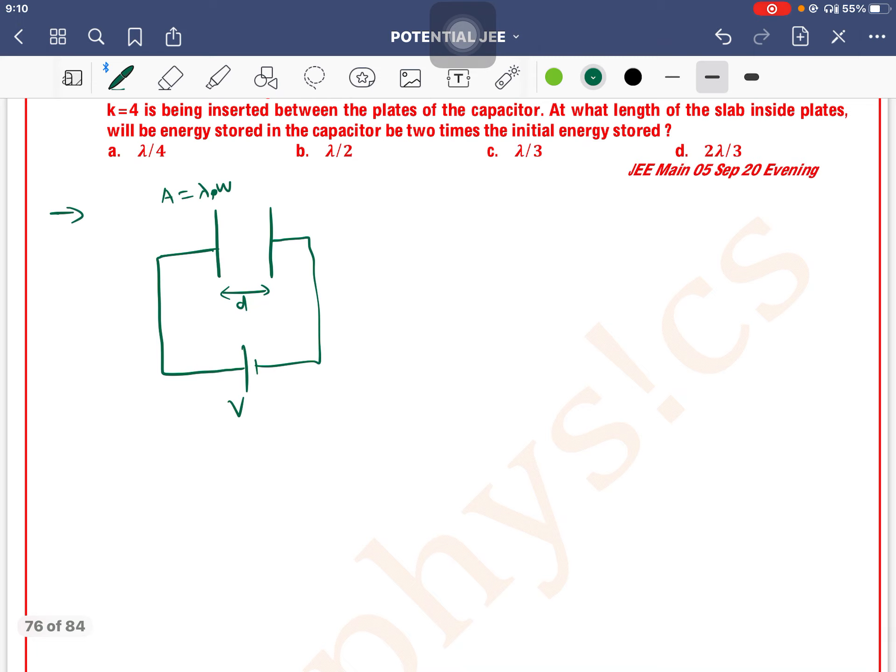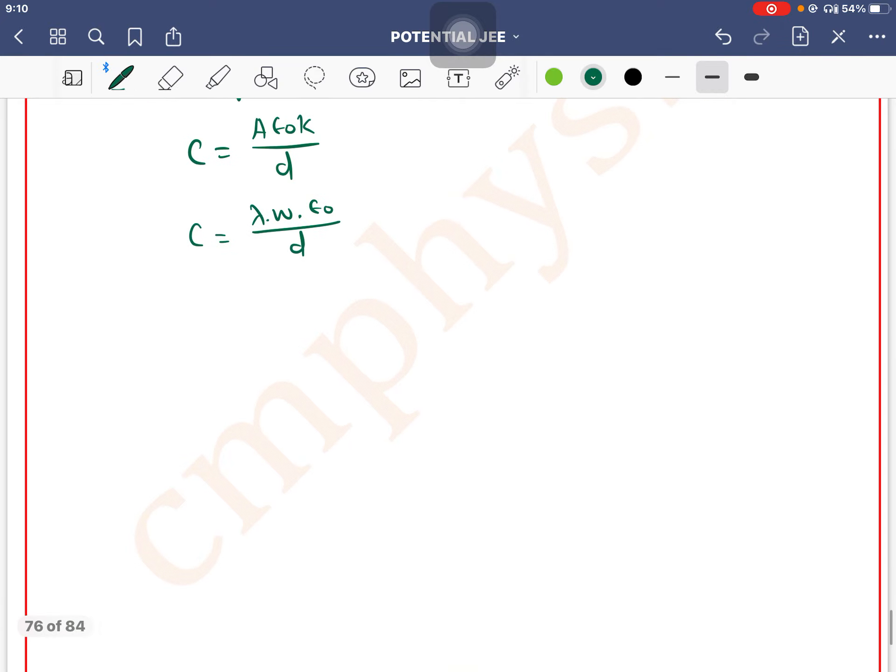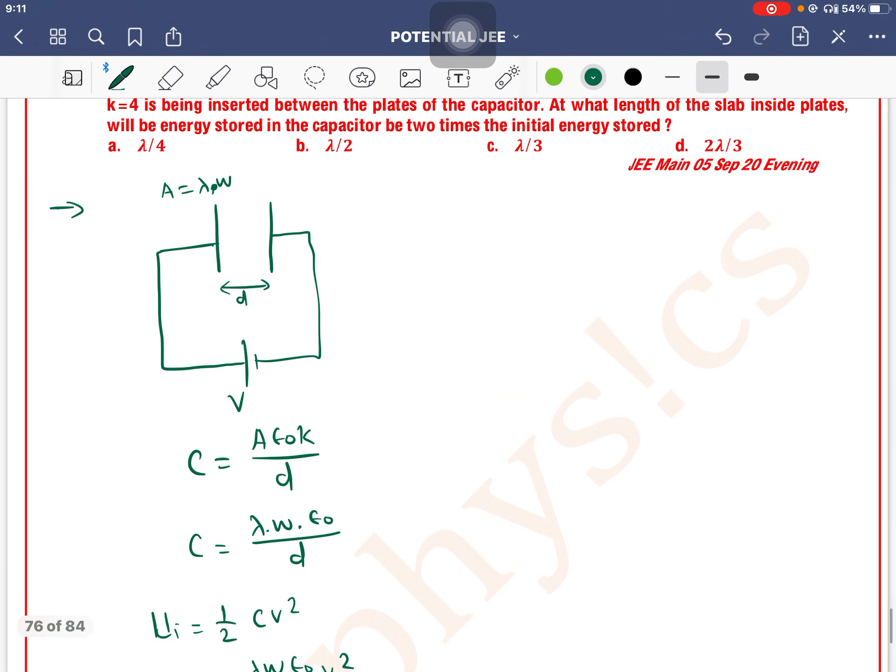First, we will start from the initial energy. We need the capacitance formula: C equals A epsilon naught K divided by D. So C equals lambda times W times epsilon naught times K divided by D. The initial energy is half C V squared, which equals half lambda W epsilon naught by D times V squared. This will be the initial energy.